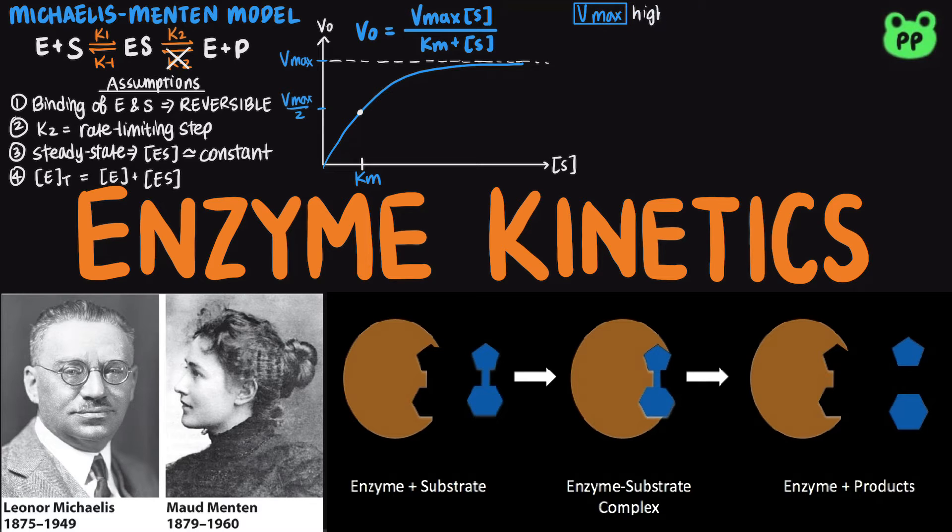The maximum velocity abbreviated as Vmax is the highest number of substrates that can be transformed into product over a given time when all the active sites are occupied.